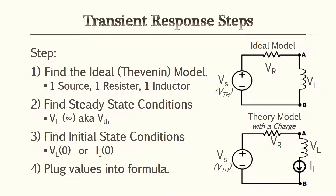To find the transient response of an RL circuit, we follow four steps. One: find the ideal Thevenin model — one source, one resistor, and one inductor. Two: find the steady state conditions, which is usually voltage at the inductor at infinite time or over five time constants. Three: find the initial conditions, usually when there's no voltage or no current flowing. Four: plug these values into the formula to obtain your answers.